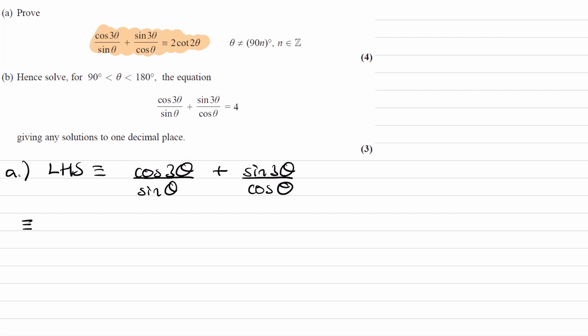So then, this becomes, make a common denominator of sin theta cos theta. This becomes cos 3 theta cos theta plus sin 3 theta sin theta, all over sin theta cos theta.